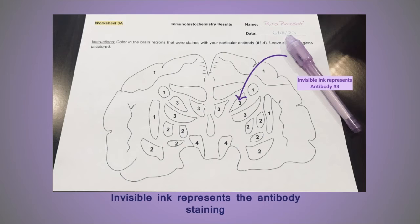Next, each student will select a number between 1 and 4, with each number corresponding to a unique set of brain regions or structures illustrated on Worksheet 3A. They will use invisible ink to shade in the regions that correspond to their chosen number, emulating the process of bathing brain tissue slices in an antibody solution targeting a specific antigen.